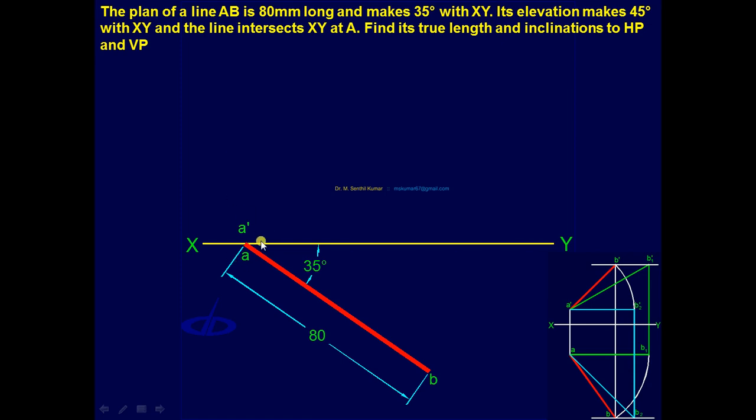I made the assumption that one end A is in HP and in VP. So I marked one end. Then I am directly drawing and completing the final top view with this 80 and 35. With this 80 and 35, I am completing the top view directly.